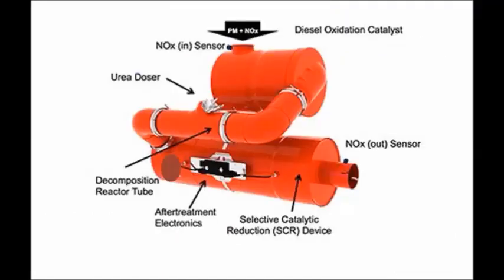Let me quickly go through another slide. Here you can see the complete after treatment system, which comprises of a diesel oxidation catalyst, a NOx sensor at the inlet which measures the inlet NOx concentration, and a urea doser which injects urea water solution into the decomposed tube. There are after treatment electronics also attached, which detect engine speed and engine load based on road conditions, and accordingly the urea doser will inject urea water solution to the decomposed tube.